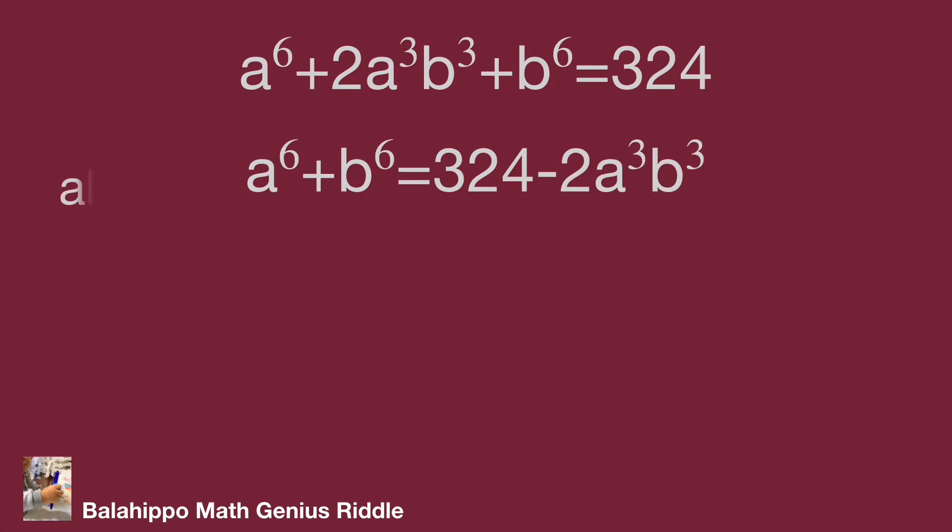ab equal to 1. Substitute ab by 1 into the equation. So the answer for a power of 6 plus b power of 6 is equal to 324 minus 2 equal to 322.